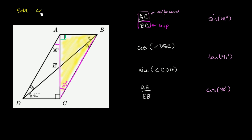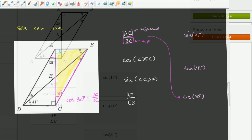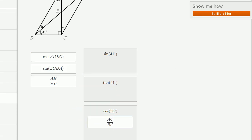Let's write down SOHCAHTOA to remind ourselves. Sine of an angle is opposite over hypotenuse. Cosine of an angle is adjacent over hypotenuse. So cosine of 30 degrees equals the length of the adjacent side, AC, over the length of the hypotenuse, BC. This right over here is the same thing as the cosine of 30 degrees, so let's drag it into that bucket.